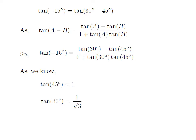We know that tan of 45 degrees is equal to 1, and tan of 30 degrees is equal to 1 upon square root of 3. So we replace these values in the formula.